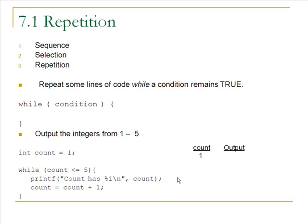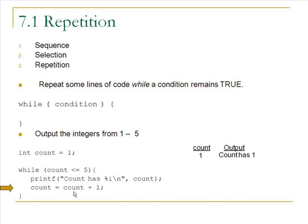When we execute the first line, the variable count becomes 1. Now we come to the while loop and evaluate the condition: 1 is less than or equal to 5 — that's true, so the next statement is inside the loop. We execute the output statement and write down 'count has 1' under output. Then count gets count plus 1, so the count variable becomes 2.